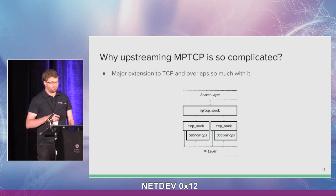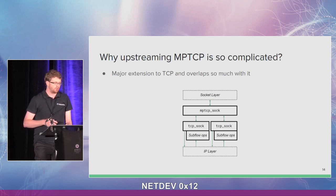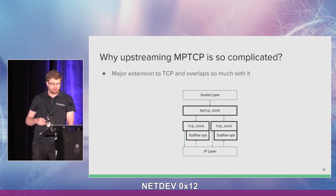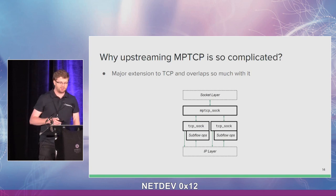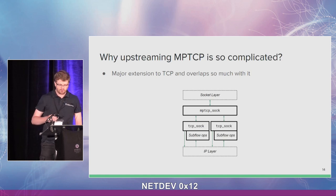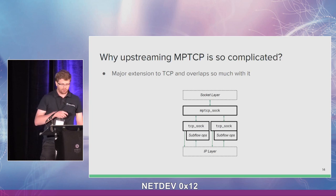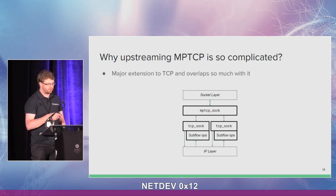The most important reason why it's so complicated is that MPTCP is a major extension to TCP and it overlaps so much with it. You could think that MPTCP sits just on top of some TCP flows — also called TCP subflows — with a nice separation of layers. But we will see that there are a lot of interactions between the different layers, and the theory is not really what we have in practice.